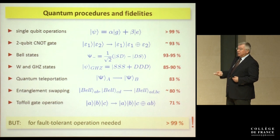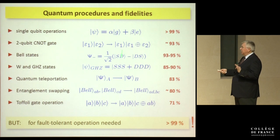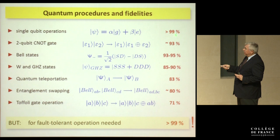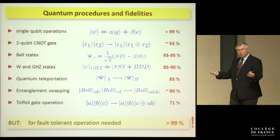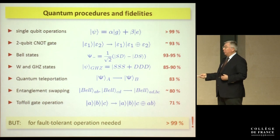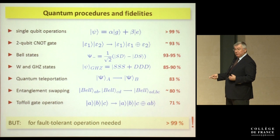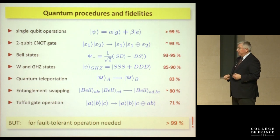Between 2003 and 2010–2011 we developed all these processes. Single-qubit operations and many gate operations achieve very high fidelities, but a Toffoli gate — controlled-controlled-NOT, needed for some algorithms — already drops to 70%. For fault-tolerant quantum error correction, one needs fidelities well above 99%, which we previously could not achieve.